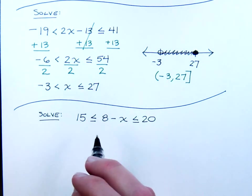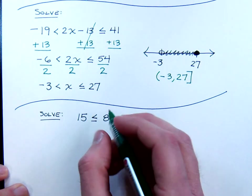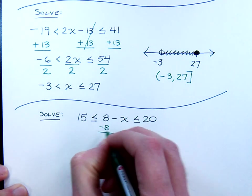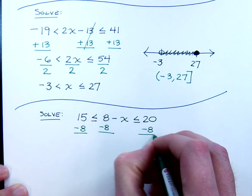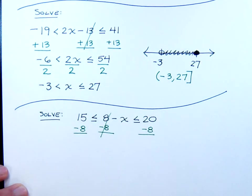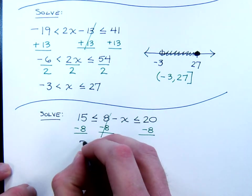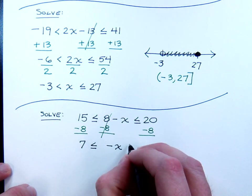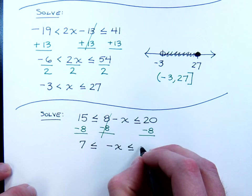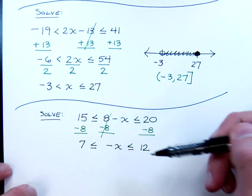Now, just like the ones we've done in the past, the first thing you want to do is to start getting the variable by itself, and the best way to do that is to get rid of this 8. So I'll subtract 8 from the middle, but that means I also have to do that on the outside parts of the inequality as well. So the 8's cancel, they're additive inverses. 15 minus 8 is 7, less than or equal to negative x, which is less than or equal to 12. Don't forget that this is a negative x. If you drop the sign, the whole problem is changed.